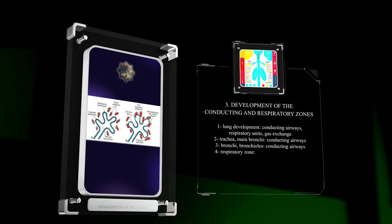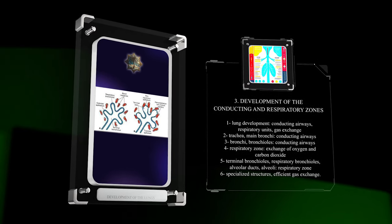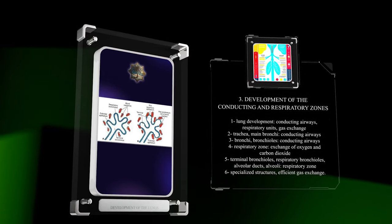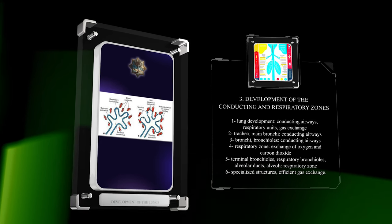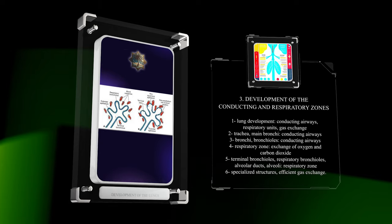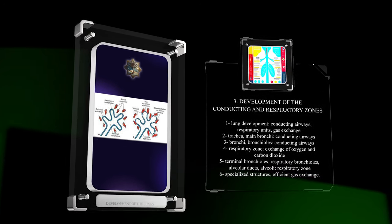As lung development progresses, a distinction arises between the conducting airways and the respiratory units responsible for gas exchange. The trachea and main bronchi, derived from the primary bronchial buds, constitute the conducting airways. The bronchi further branch and divide into smaller bronchioles, forming a complex system that conducts air to the respiratory zone.